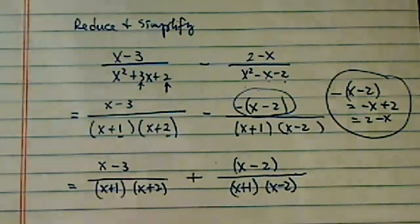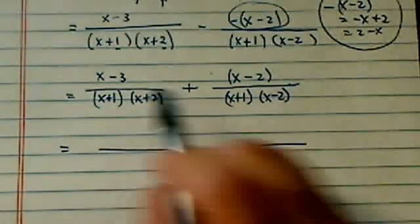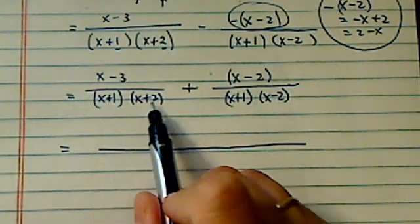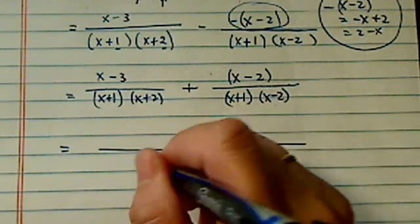From here, I'm going to do a common denominator because there's three terms: x plus 1, x plus 2, and x minus 2 that I need.